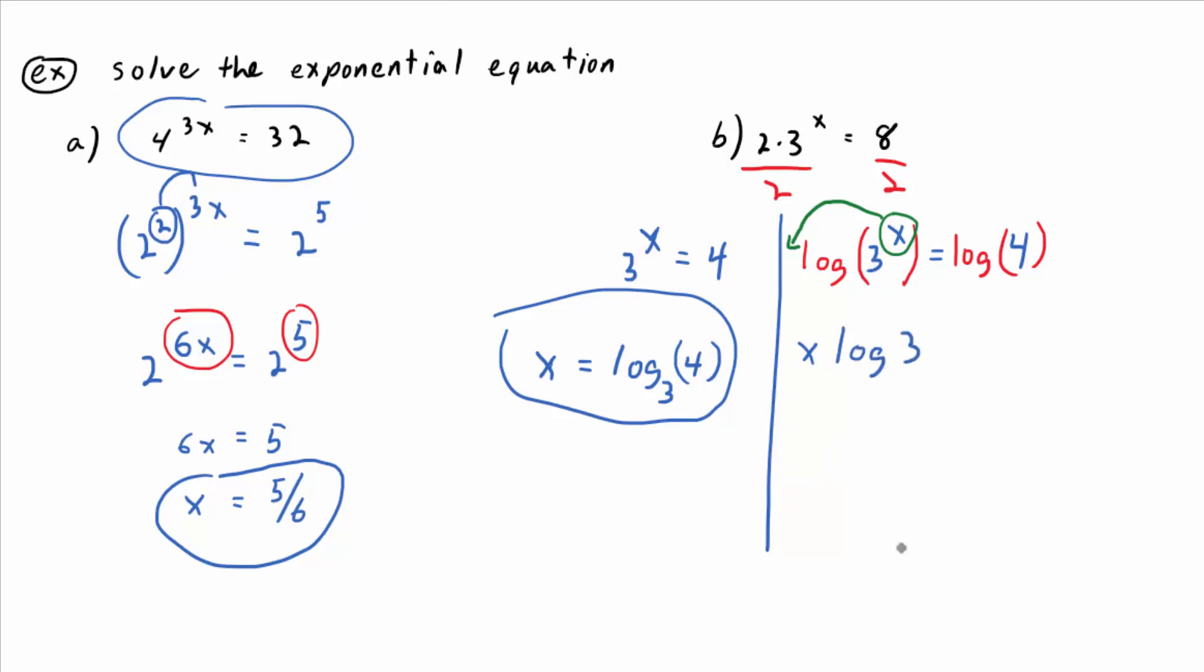Remember, the parentheses around the 3 are optional. Equals log of 4. I put them in there sometimes to remind you that the 3 and the 4 are inputs, but you don't have to have those parentheses there. Just remember, log of 3 does not mean log times 3. Log of 3 really means like a function of 3. The 3 is the input of the function.